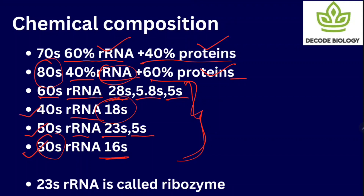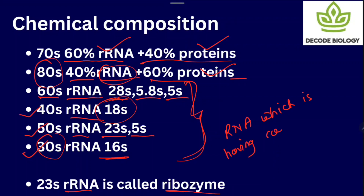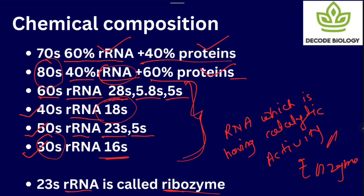The 23S RNA is called a ribozyme. Why? Because ribozyme means RNA which has catalytic activity — it acts as an enzyme. So the 23S RNA acts as an enzyme inside the ribosome, which is why it is called a ribozyme.